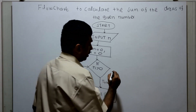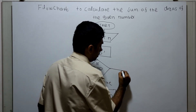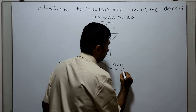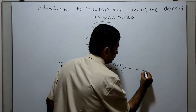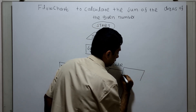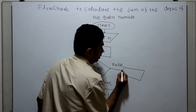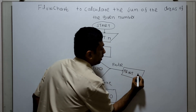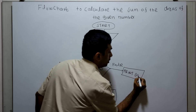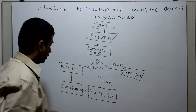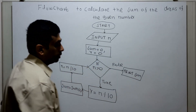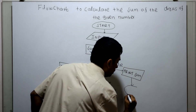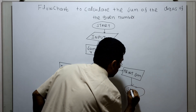When the condition n greater than 0 becomes false, we exit the loop. In the false branch, I am printing the sum. The sum will get printed, and then this is the logical end of the flowchart.